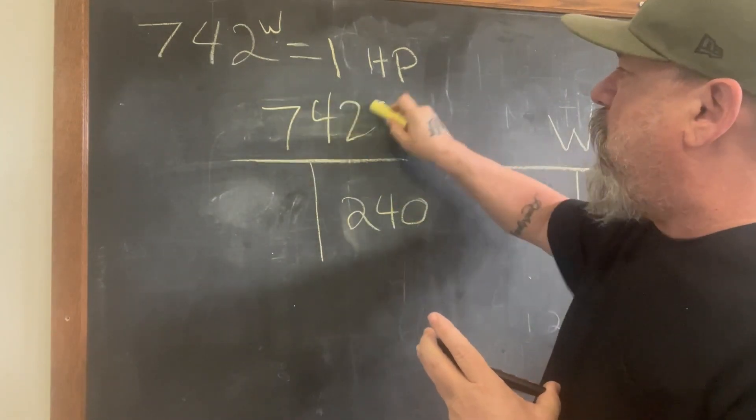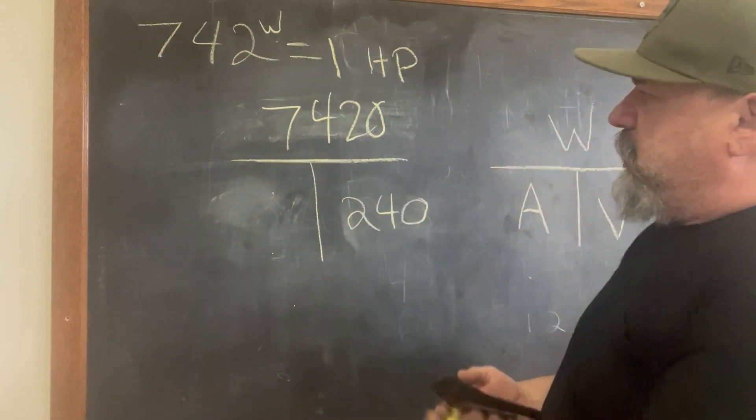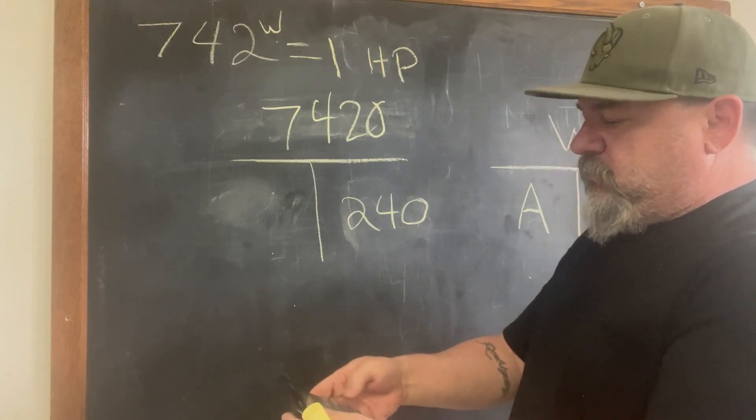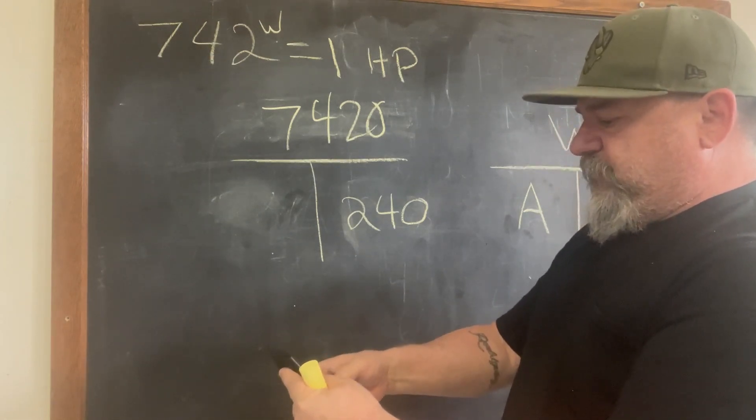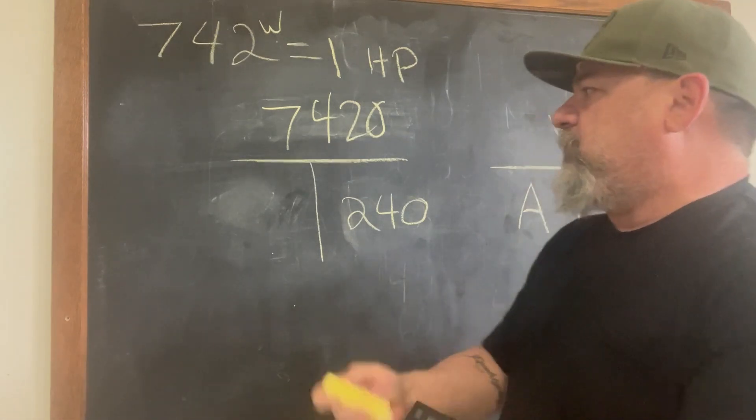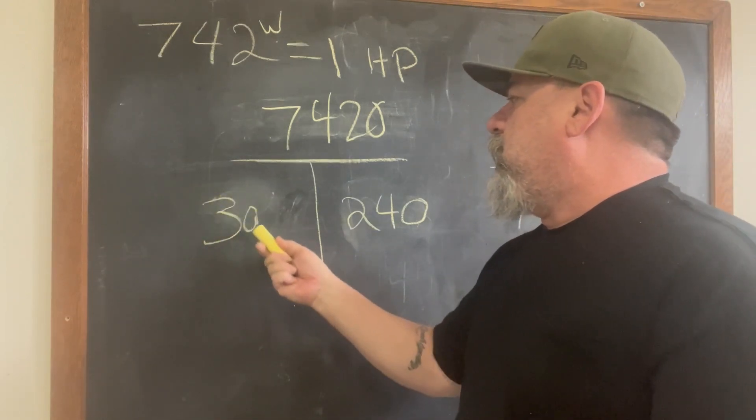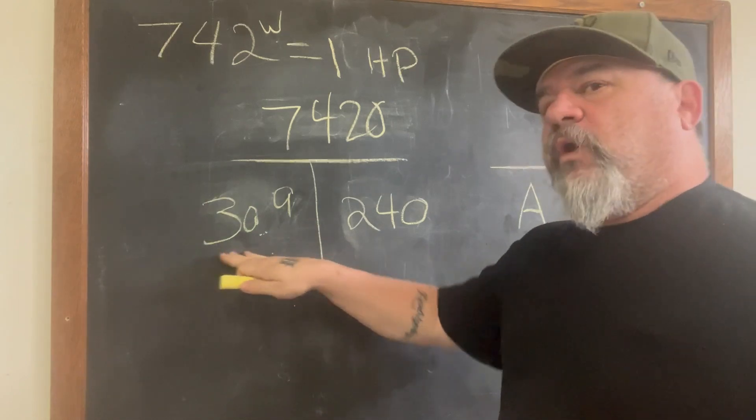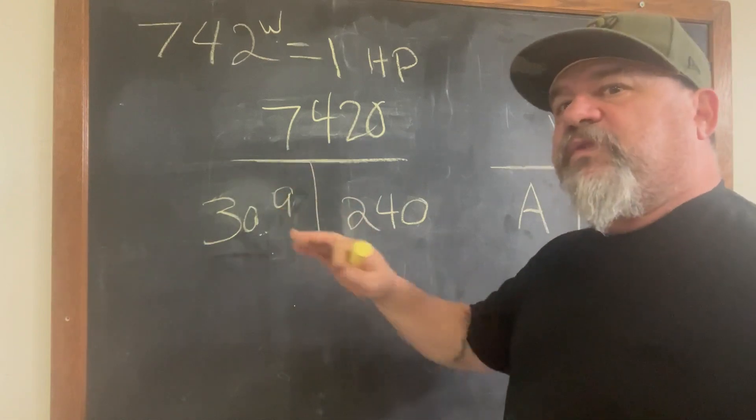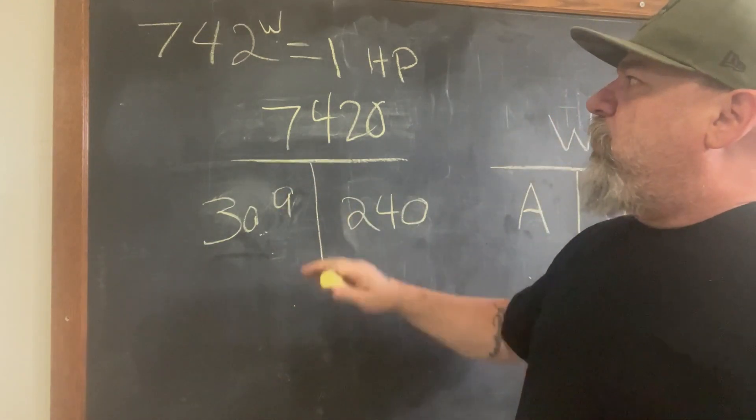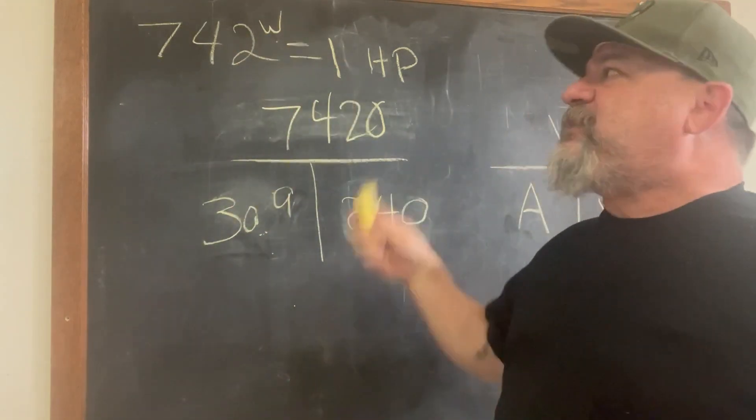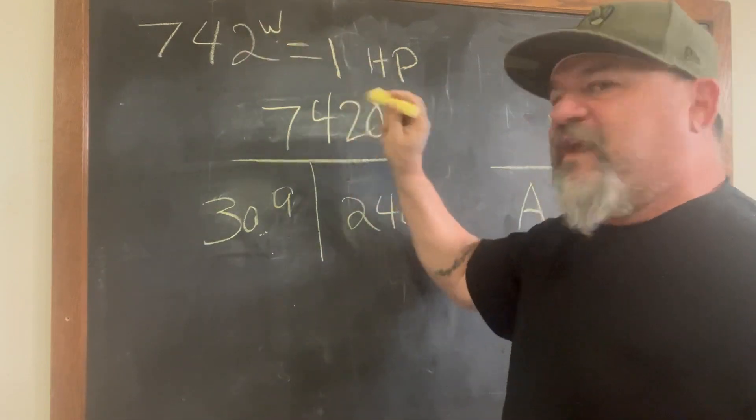7420. So then we got 7420, 7420 divided by 240 equals 30.9 amps. 30.9. We're over the 30 mark. So we're going to bump this up to a 40 amp breaker. So we're good anyways, with that 80% mark that we have talked about. So this is how you can determine how many watts you have per horse. That's how we can determine the wattage. So we can fill in that value for that.